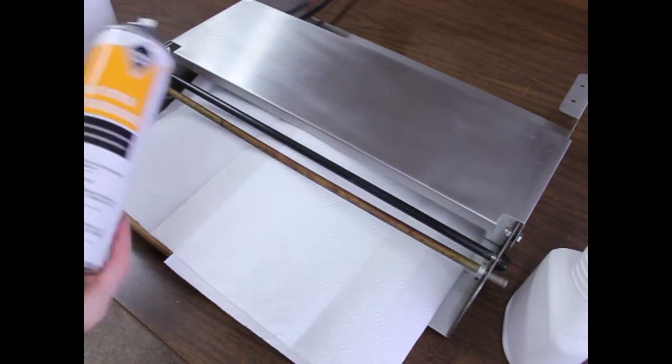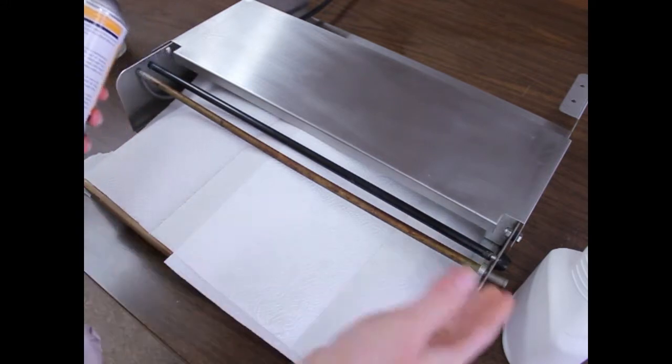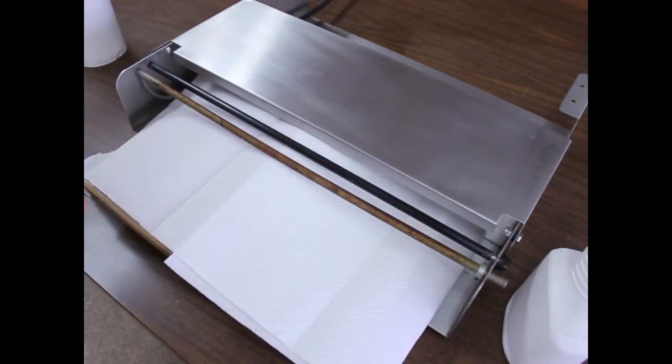Now I'm going to take our degreaser. I have a foaming degreaser here as well as a spray degreaser, and I'm going to spray the cutoff rod and let that sit for a little bit to eat into the gunk that's on the rod.